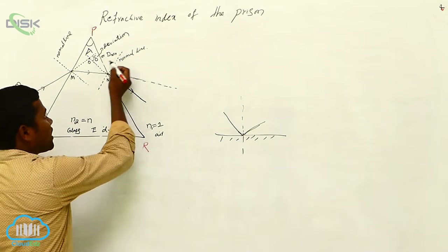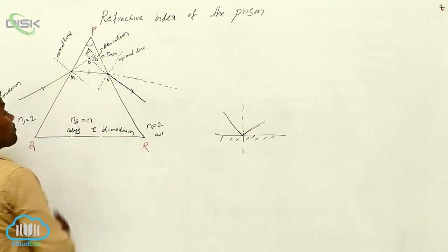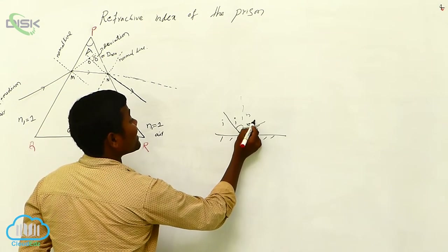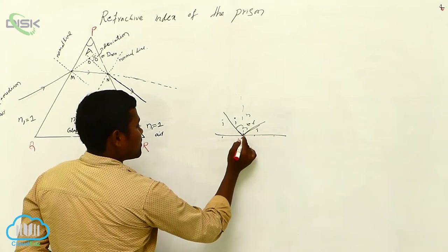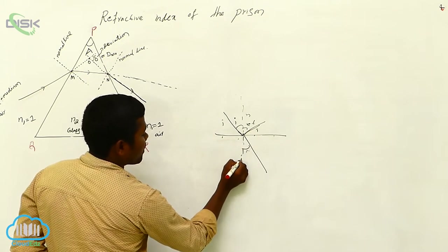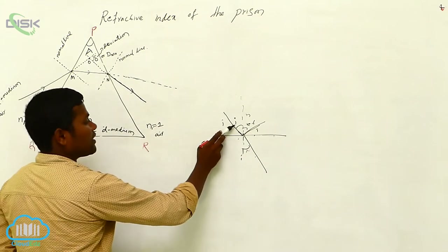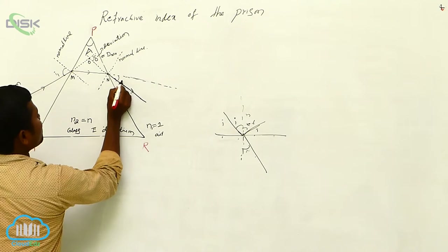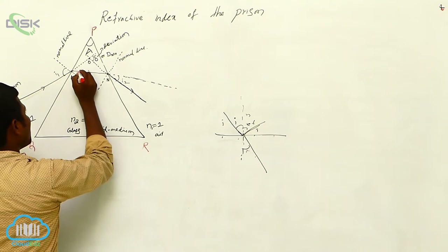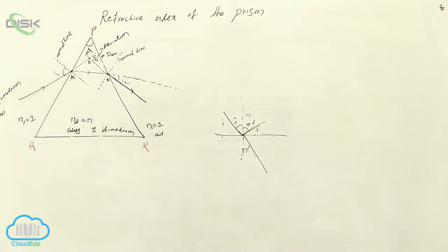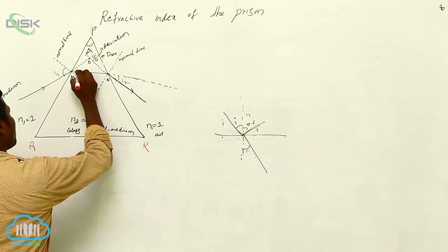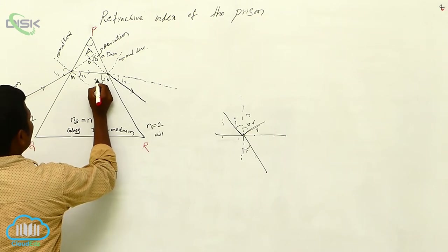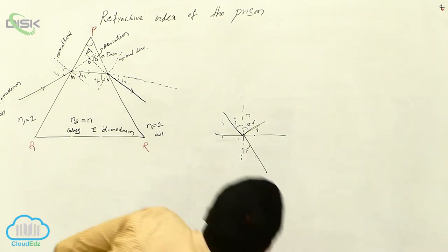The minimum deviation we denote as delta or dm. Now from the diagram: this is the normal, this is the incident ray, this is the refracted ray. The angle between the incident ray and the normal line — that is the incident angle I1. Here inside the prism, the refraction angle on the first surface is R1. On the second surface, inside the prism the angle is R2, and the incident angle at the second surface is I2. This is about the diagram.